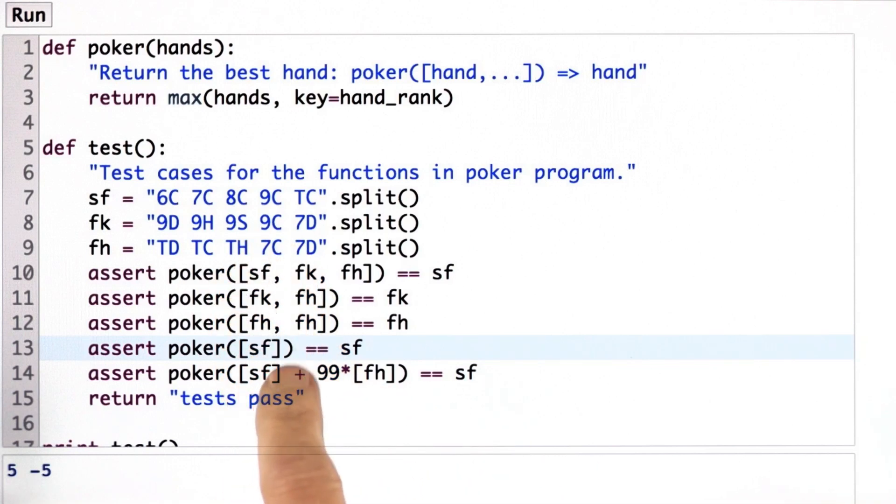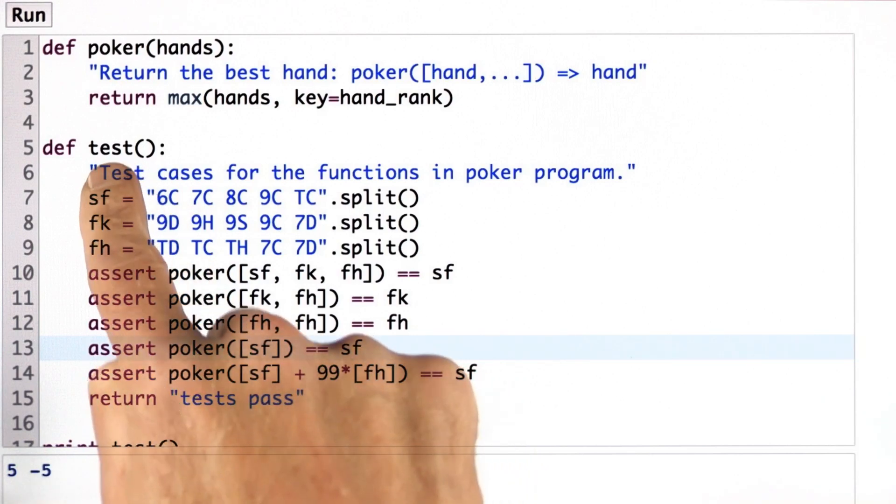So there would have to be at least nine tests and probably many more tests than that before we had real confidence that we got it right. But at least we got to start and we have some simple sanity tests within our test suite.